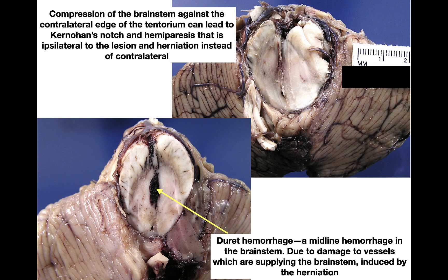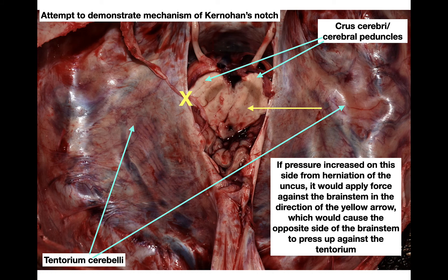Kernohan's notch occurs when the uncus herniates and pushes the brainstem over to the opposite side, where it pinches against the tentorium, creating a notch. This can cause hemiparesis ipsilateral to the lesion — ipsilateral to the point of herniation rather than the expected contralateral side. Looking at the image of the tentorium with the midbrain coming through, you can see the crus cerebri and cerebral peduncles. Pressure from the herniating uncus pushes the brainstem toward the tentorium on the opposite side, notching those structures and producing the ipsilateral hemiparesis.